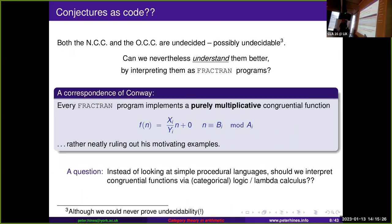Just to be clear, I'm not going to try to prove either of these. Instead of trying to prove them, I'd like to ask: can we understand them by interpreting them as FRACTRAN programs? What FRACTRAN does is implement a congruential function — but unfortunately, the types of congruential functions implemented by FRACTRAN are purely multiplicative. We multiply our numbers in each modular class by a fraction, but we're not adding anything, so it rules out Conway's own motivating examples.